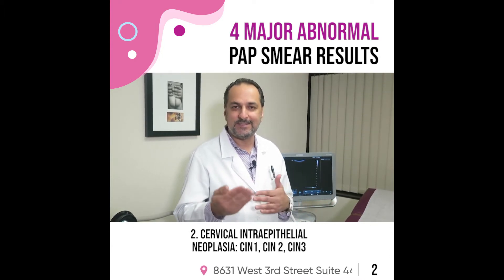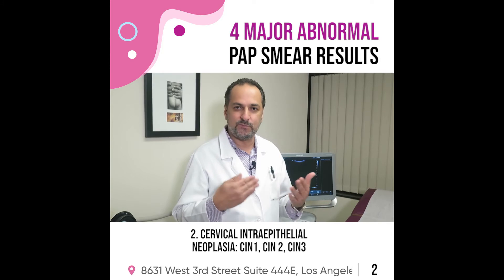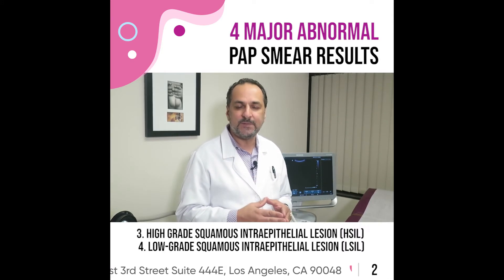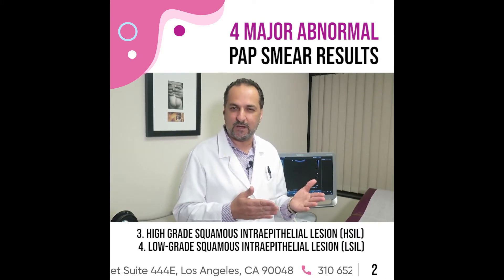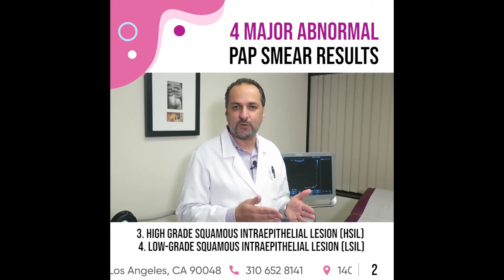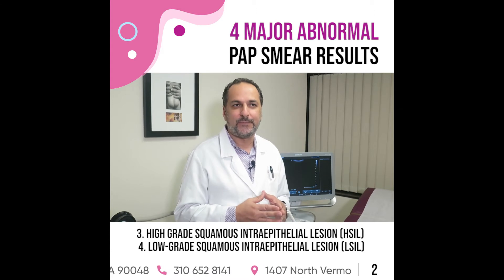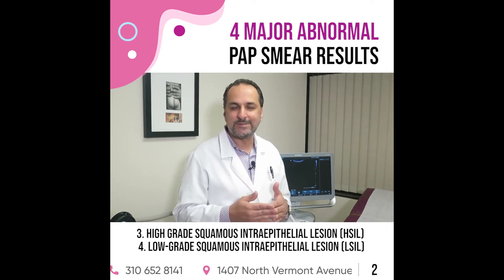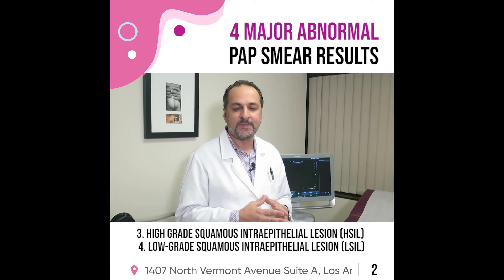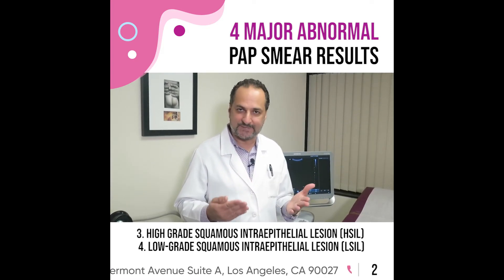The other levels are CIN1, CIN2, and CIN3. These are different abnormal cell categories, and the higher the number, the more precancerous the cells are. Sometimes people also use the categories of high-grade and low-grade lesions, or high-grade SIL and low-grade SIL. CIN1 and CIN2 are considered low-grade, and CIN3 is considered high-grade.